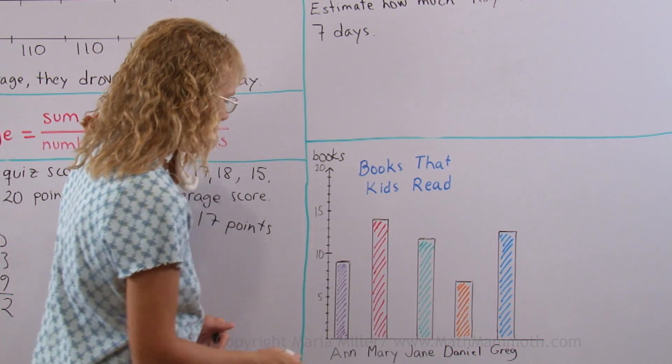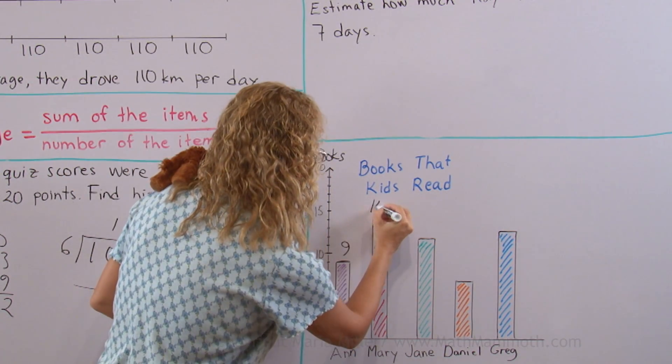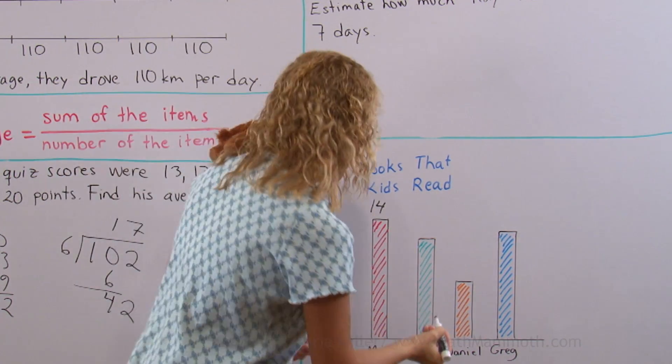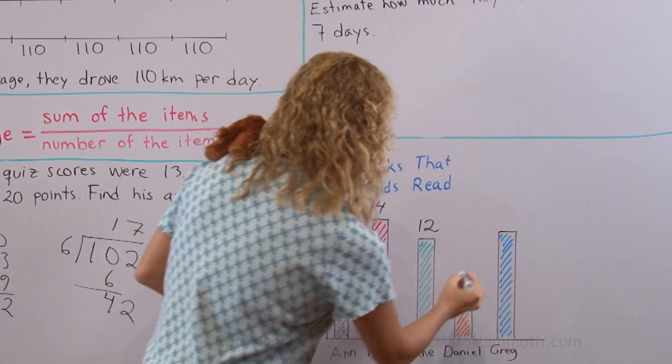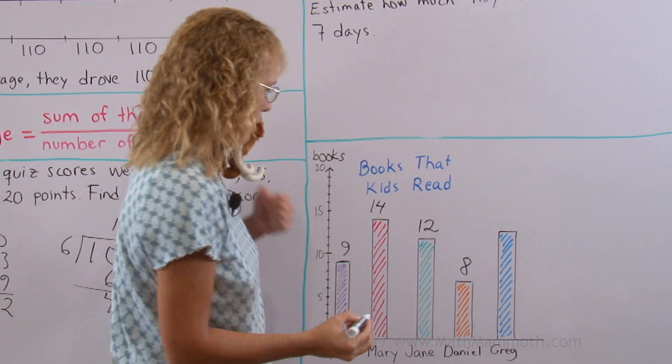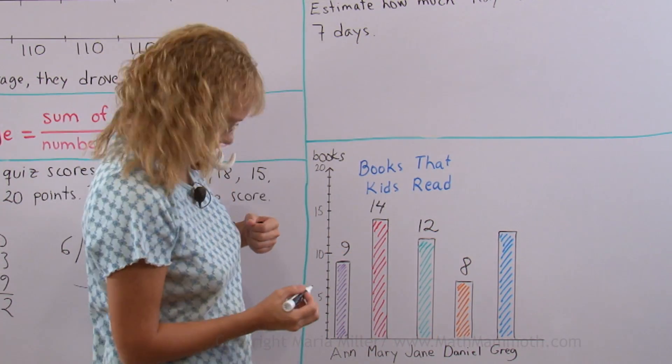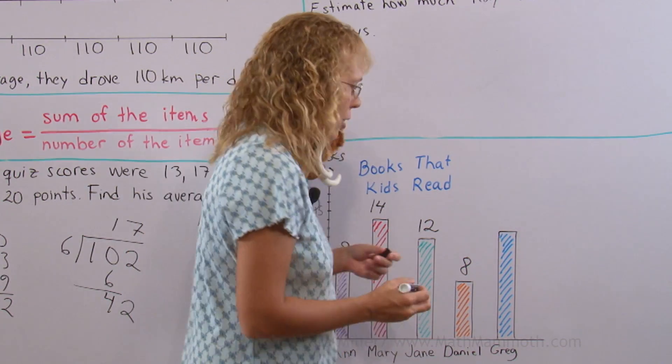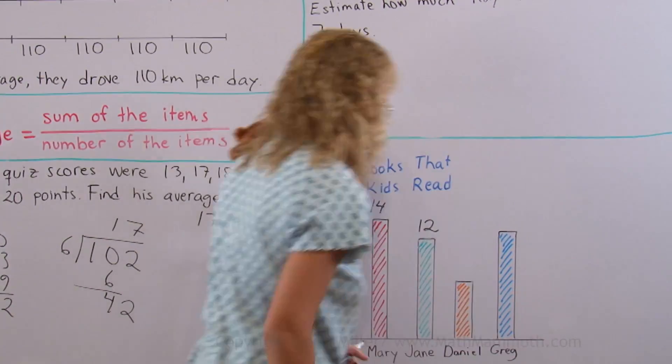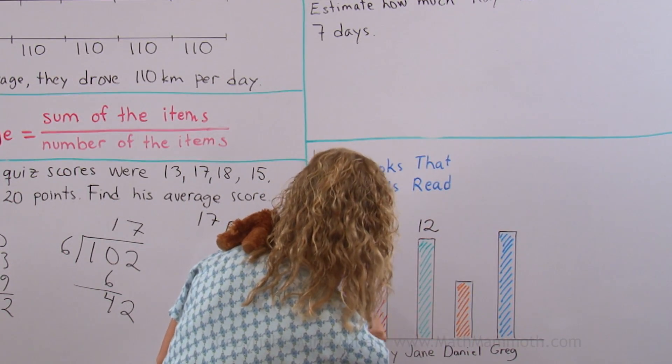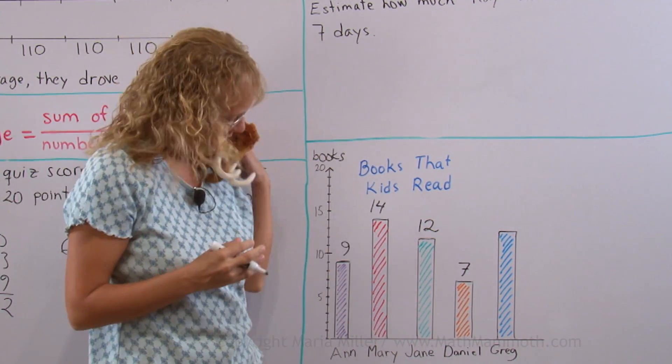But what I need to do is find out or read from the graph how many books I read. How many books Mary read and so on. So let me see. I read 9 books, right? Mary, 14. Jane, 12. And Daniel, 8. What is it Matthew? Oh, I made an error. Okay, let me erase that. What is it? 7? Thank you Matthew. Thank you so much.